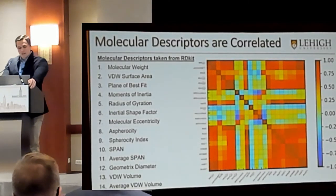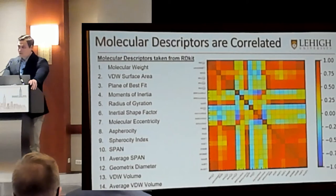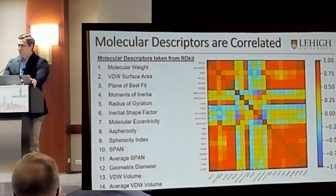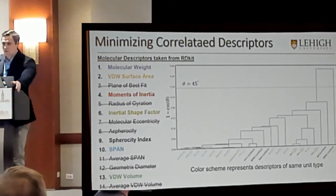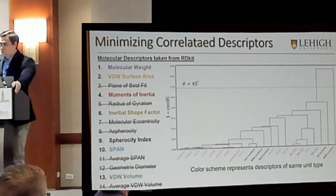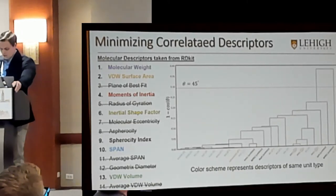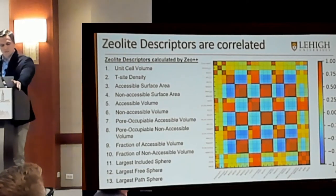However, these descriptors are highly correlated, as you can see in the heat map on the right-hand side, and this can really influence our model — especially when we're trying to determine which descriptors are most sensitive. The list of descriptors we chose were based on geometric factors. To limit the amount of correlation while salvaging as much predictability as we can, we performed hierarchical clustering, where we eliminated approximately half of our descriptors. We essentially took the dot product between these descriptors, and those that fell below 45 degrees and also constituted a separate unit type were chosen to be part of our model.